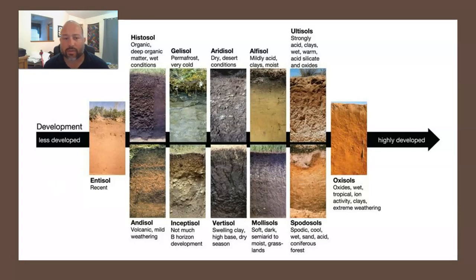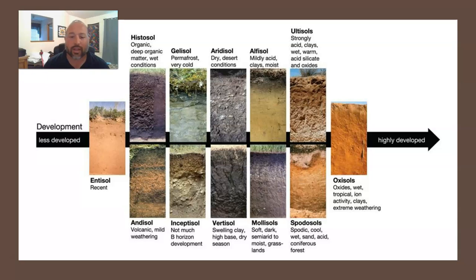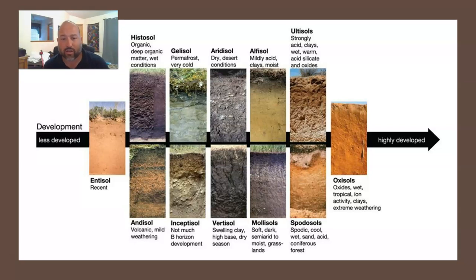Here's a look at those 12 soil orders. We go from less developed soils to highly developed soils. They look very different, and when you read through the descriptions, they're pretty different too. You go from something like an aridosol — dry desert conditions — to a gelosol, which is permafrost conditions, to an inceptosol with not much B horizon, an andosol with volcanic mild weathering, and a mollisol — soft, dark, semi-arid moist grasslands.